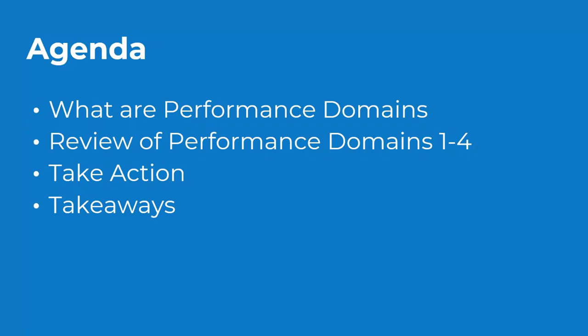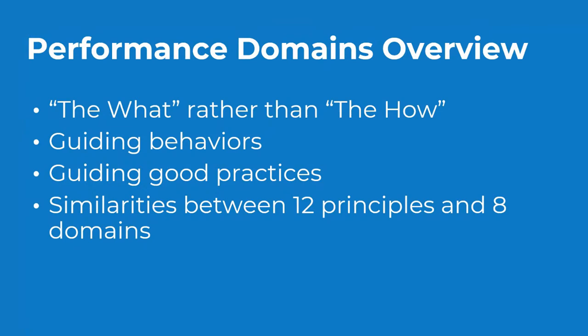With the launch of the PMBOK Guide 7th edition came some big changes, particularly a shift away from the process-led approach toward a more principles-based one. It's now much more about the what than the how of successful project management. This change also incorporates agile, iterative, and hybrid workflows spanning multiple industries. Along with 12 project delivery principles, we now also have the eight project performance domains to further guide our behaviors and good practices.